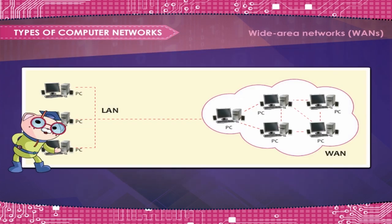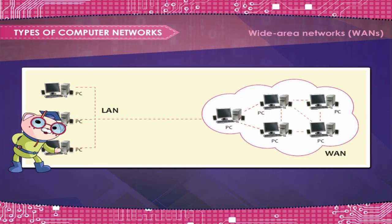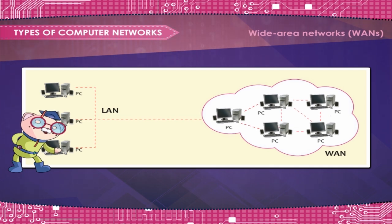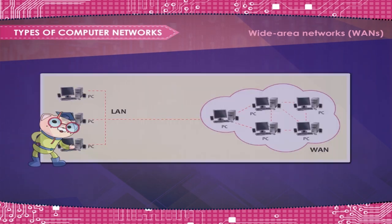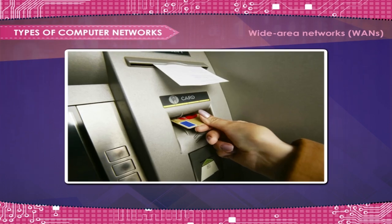Wide area networks, or WANs — the computers are farther apart and are connected by telephone lines or radio waves. For example, ATMs all over.